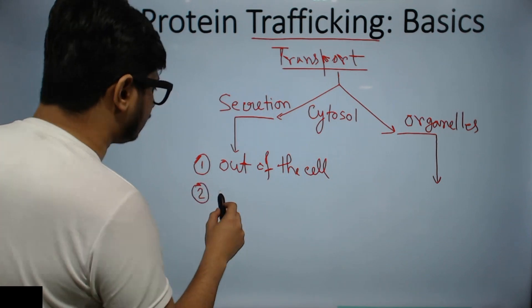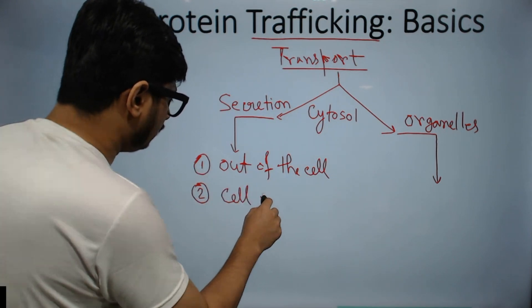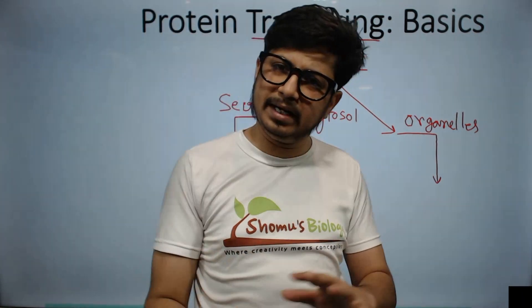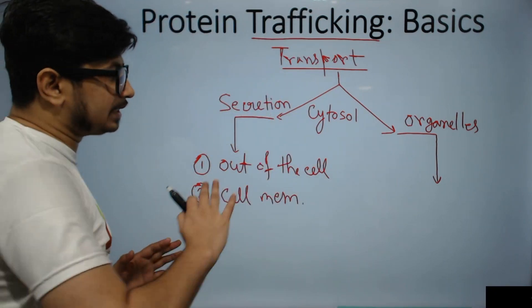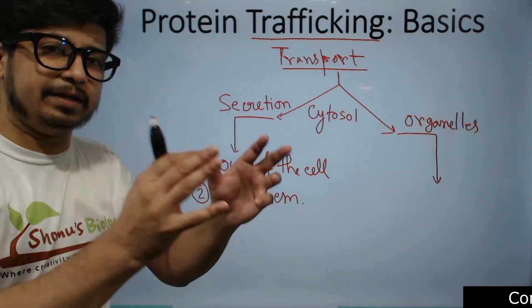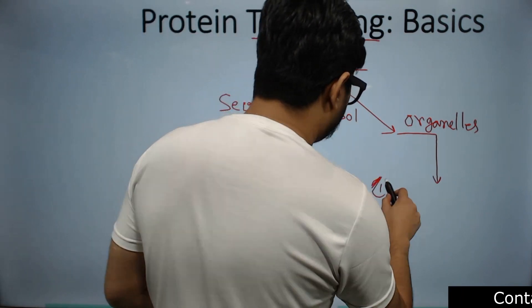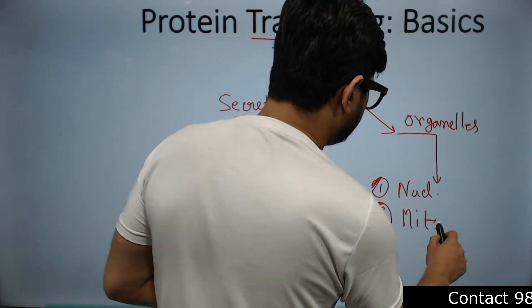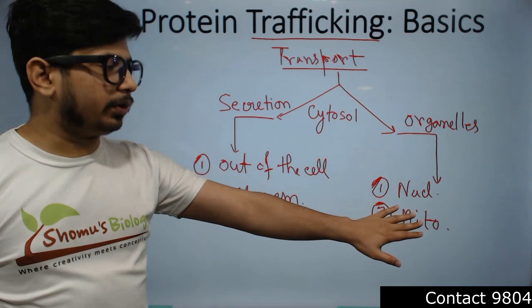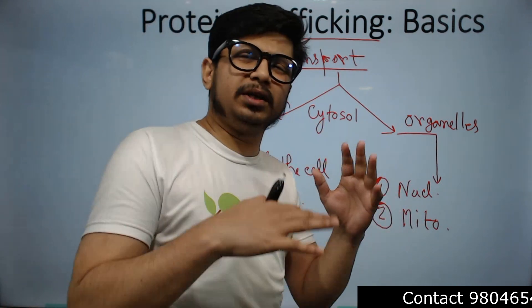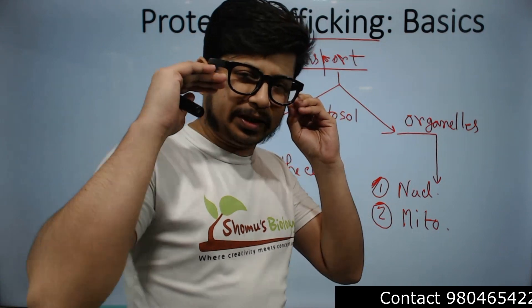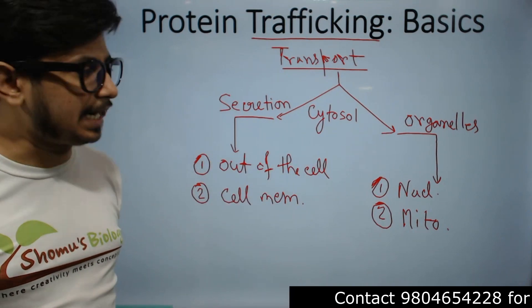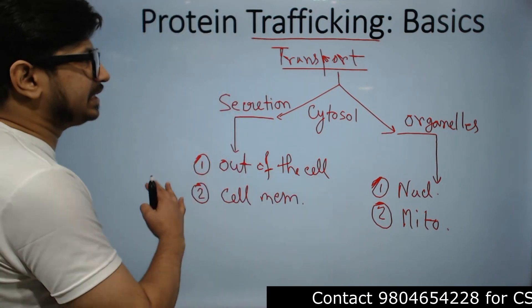The first pathway is the secretory pathway — proteins destined for secretion out of the cell or for delivery to the cell membrane, since numerous proteins need to be implanted and presented at the cell membrane. The second pathway involves delivery to different organelles: proteins can be targeted to the nucleus, mitochondria, peroxisomes, and other organelles — that is an entirely different route.